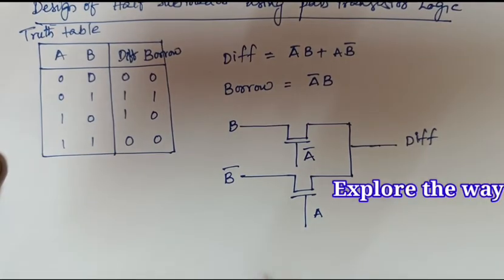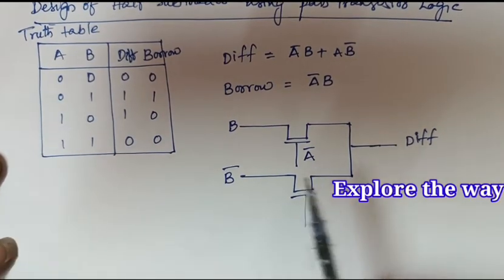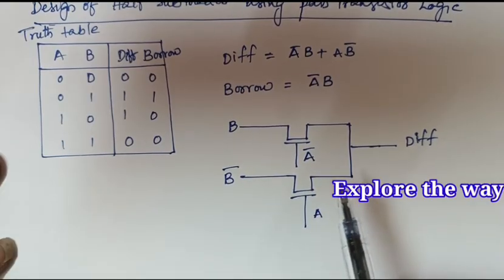Coming to the borrow output. In the borrow output we have only one term. That is when A is equal to 0.